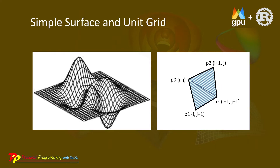We can divide this quadrilateral into two triangles. P0, P1, P2 is one triangle. P2, P3, and P0 is another triangle, as shown here. In this example, we will create the vertex data, normal vector data, and color map data for this quadrilateral unit cell.